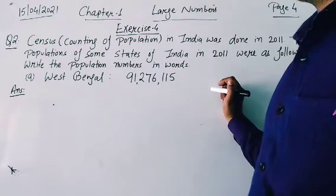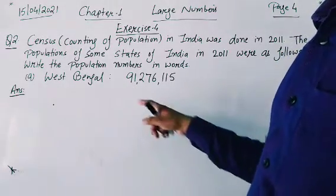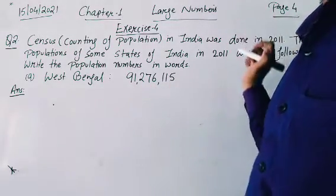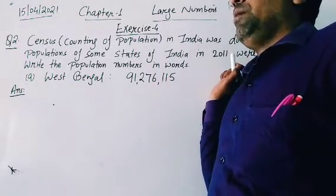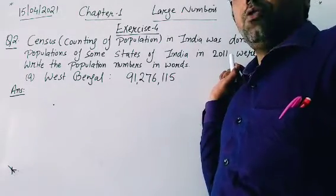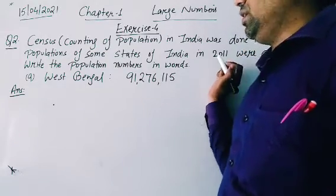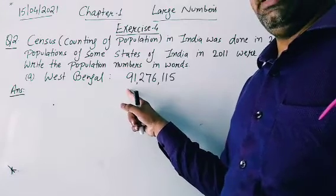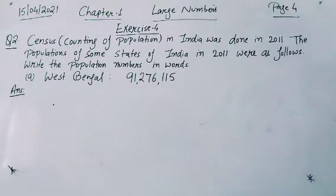In part A it has been given: West Bengal. The number given is 9, 1, 2, 7, 6, 1, 1, 5. Students, on the basis of the comma — whether it follows the Indian place value system or the international place value system — you can find it easily. I think students the answer will be the same.